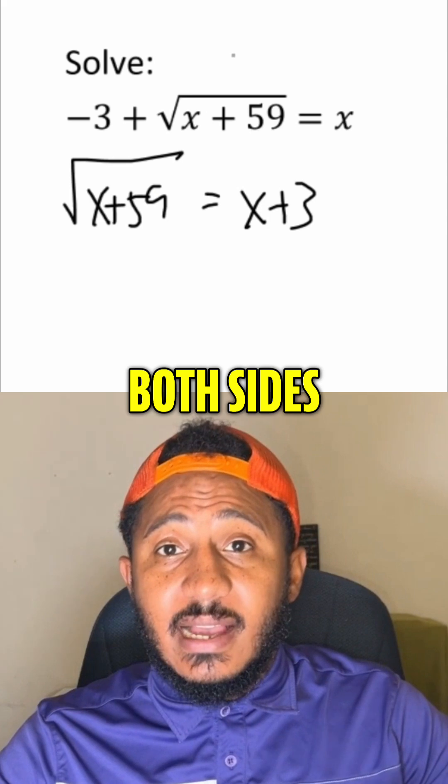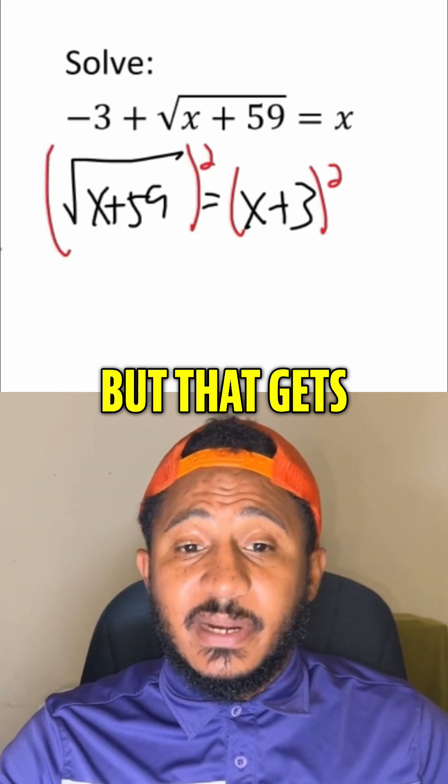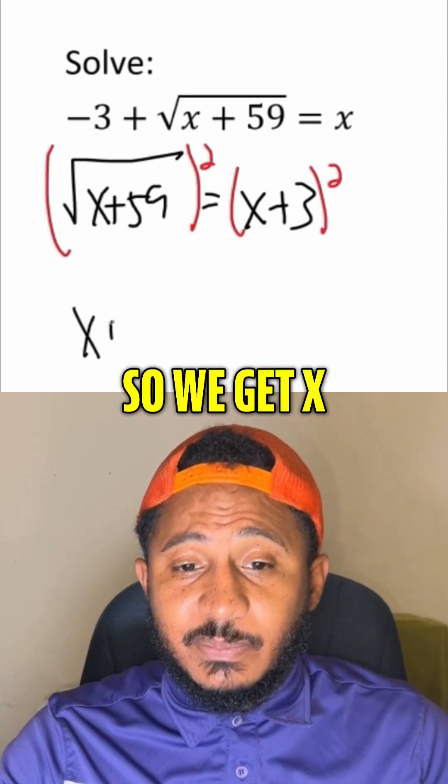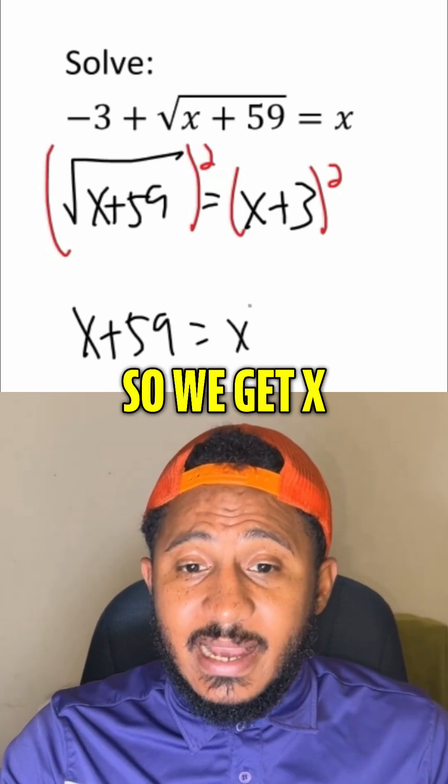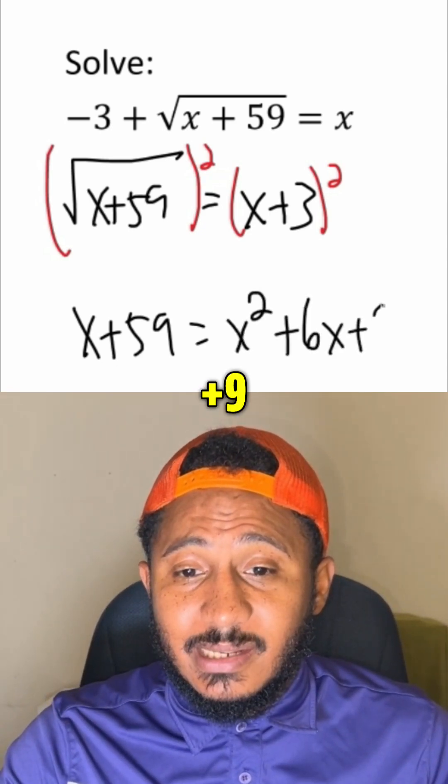Now we can square both sides, squaring both sides, but that gets rid of the radical on the left-hand side, so we get x plus 59. And then square on this right-hand side, we have to FOIL this out and multiply this out, so we get x squared plus 6x plus 9.